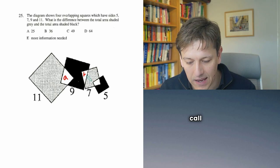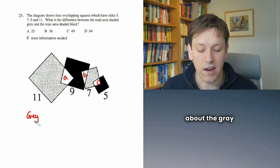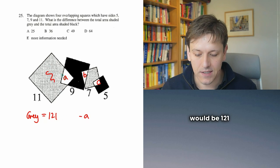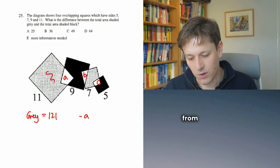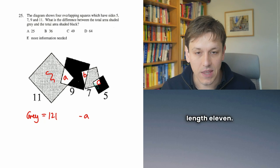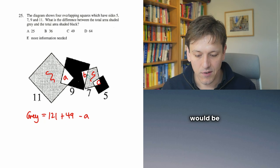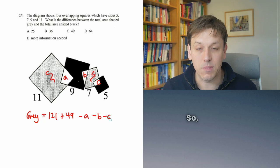So I could call this one A, this one B, and this one C. And if we think about the grey shaded area, that would be this area here to begin with, that would be 121 minus A. So I'd take away that A from the square that's got side length 11. I would then look at the grey shaded area here, and that would be 49 for the 7 squared. And I'd want to subtract B and C, so minus B minus C.